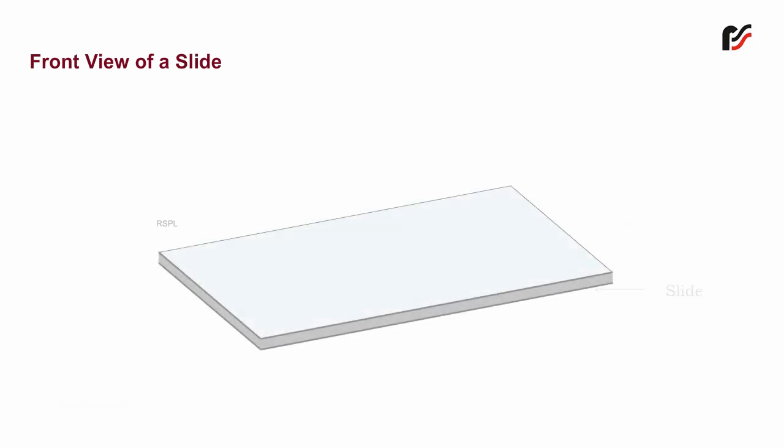Front view of a slide. To locate the center of the slide, place the slide on a paper and draw its outline. Draw the diagonals and mark the center. Now place the slide back on this paper over the outline drawn.